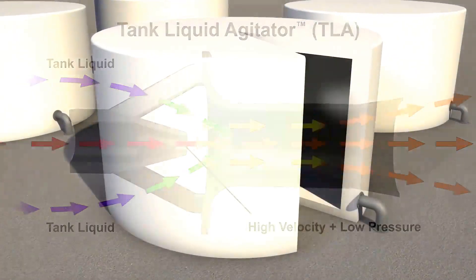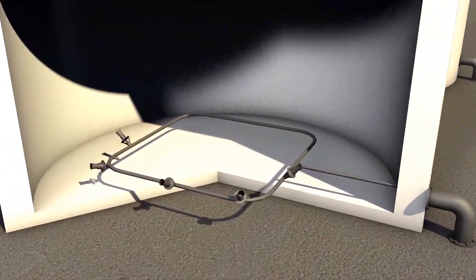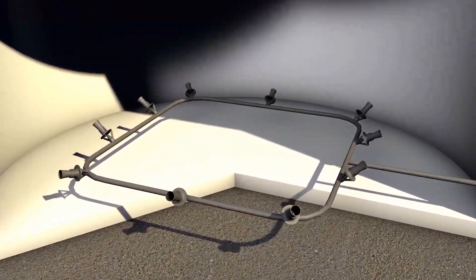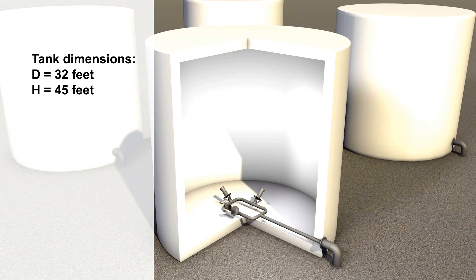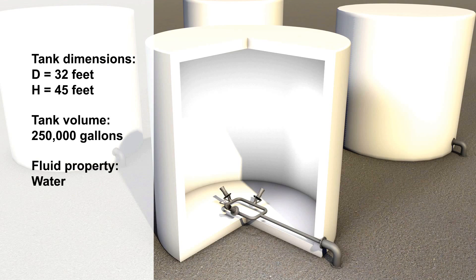We will use your data and goal of mixing to design your system. This tank has a diameter of 32 feet, a height of 45 feet, and a volume of 250,000 gallons. The liquid is water. The turnover time requirement for blending was one hour.